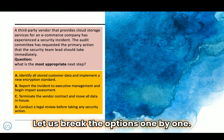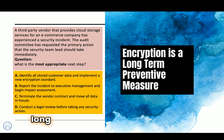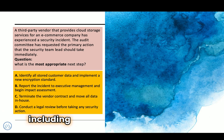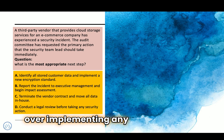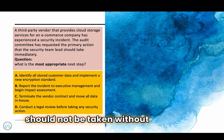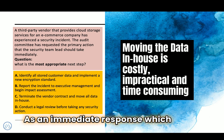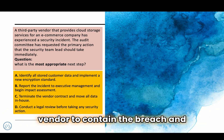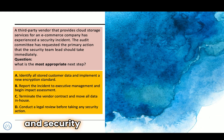Option A — identifying all stored customer data and implementing a new encryption standard — is not the best immediate response. Encryption is important but it is a long-term preventive measure. The damage must be assessed first, including whether the vendor already had encryption in place. Immediate containment and risk evaluation take precedence. Option C — terminating the vendor contract and moving all data in-house — is a drastic step that should not be taken without a full impact assessment. It is time-consuming, costly, and impractical as an immediate response. The focus should be on working with the vendor to contain the breach. Termination may be considered only after assessing vendor liability and confirmed security failures.